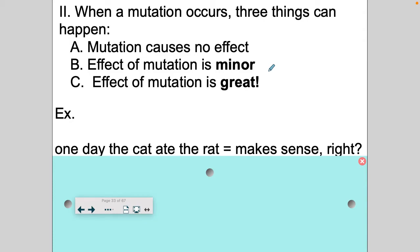Instead of brown eyes, you have blue eyes. That's not going to hurt you, but it is a minor mutation. And sometimes the effect of the mutation is great, where it usually results in a genetic disorder.